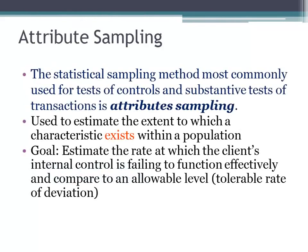I'll go into variable sampling more next week, so let's get back to attribute sampling. With attribute sampling, you're looking at attributes and testing internal controls. You want to estimate the extent to which a characteristic — for example, whether shipping documents support sales in the sales journal — exists within the population. If your audit objective is to test the occurrence of sales, you want to know that for that population of sales they're valid and supported by shipping documents.